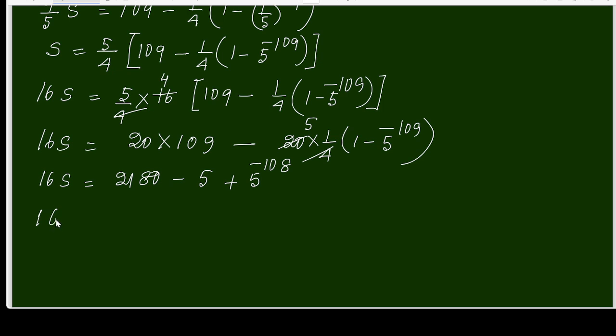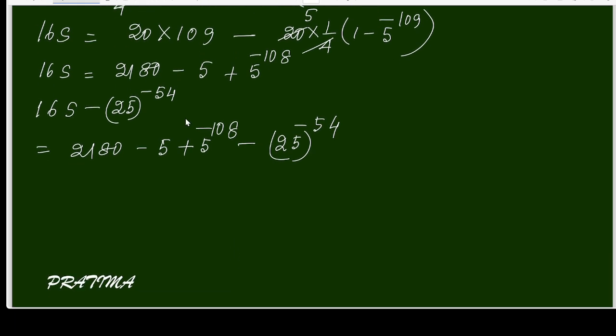The question is to evaluate 16S minus 25 to the power negative 54. This will be 2180 minus 5 plus 5 power negative 108, and minus 25 to the power negative 54. These two are the same because 25 power negative 54 is the same as 5 power negative 108. So these two will be cancelled. We are getting 2180 minus 5, which equals 2175 as the answer.